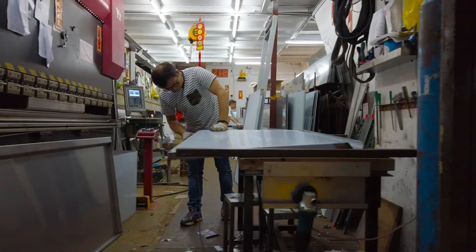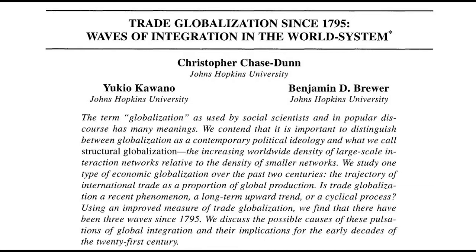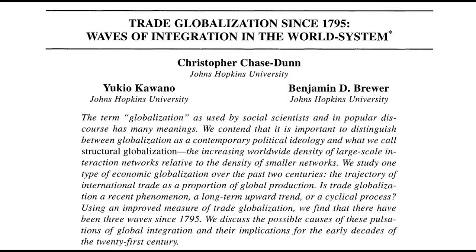In the year 2000, sociologists Christopher Chase-Dunn, Yukio Kawano, and Benjamin Brewer performed an extensive analysis of modern nation-states' production and trade, and classified them as core, periphery, or semi-periphery.